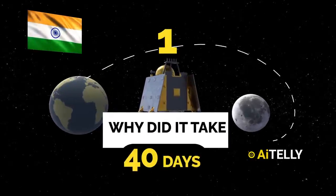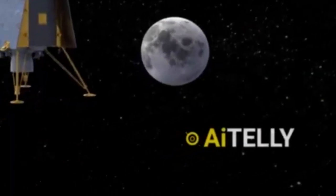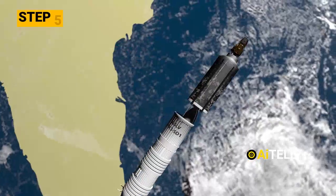Parts. Number one, why did India's lunar orbiter take 40 days to get to the moon whereas the other lunar landers took a mere four days?